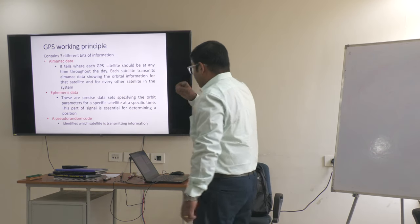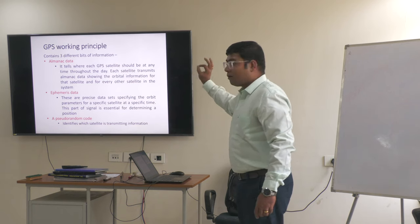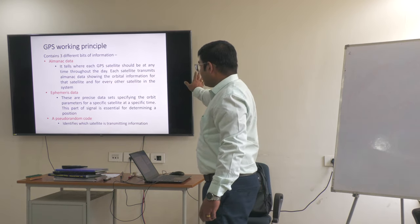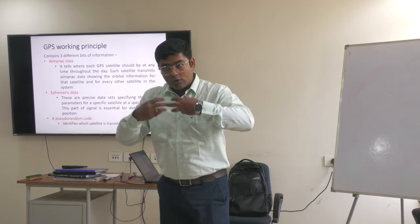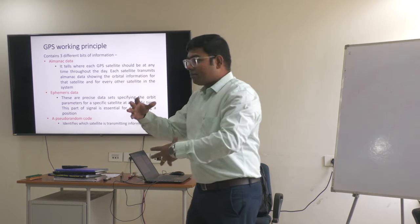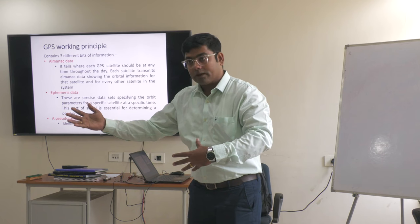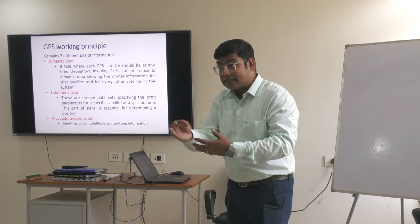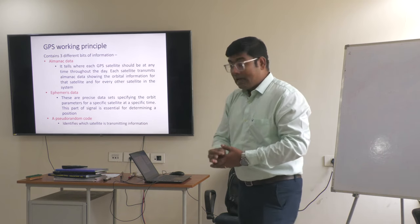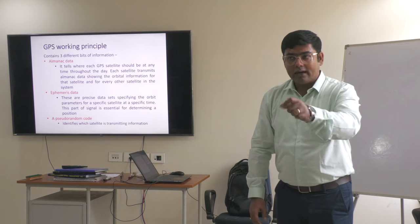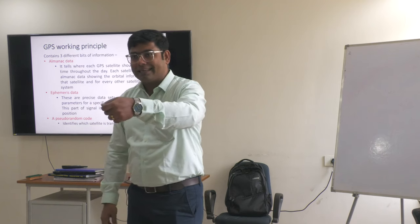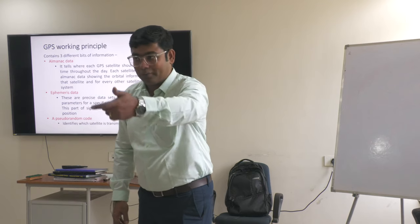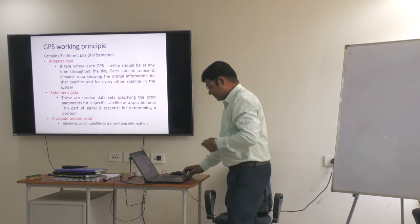The almanac data tells where each GPS satellite should be at any time throughout the day. Each satellite transmits almanac data showing orbital information for all the satellites, as I have already mentioned. The ephemeris data contains precise data for a specific satellite and its exact position at a particular time. The pseudo-random code is a signal — a particular coded signal. Why is it known as a pseudo-random code? Because that particular signal is something like a noise signal, hence pseudo-random.